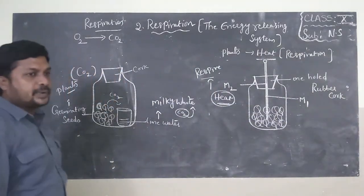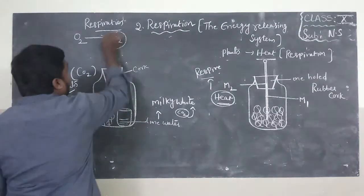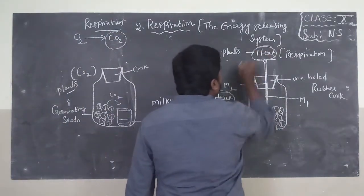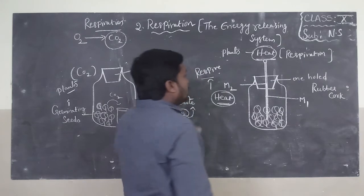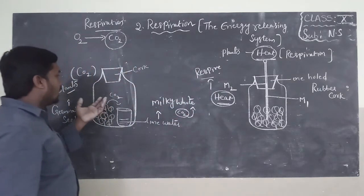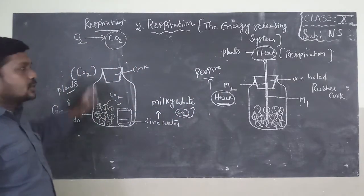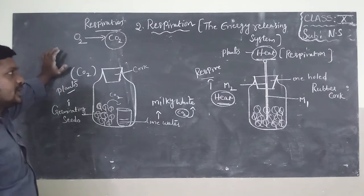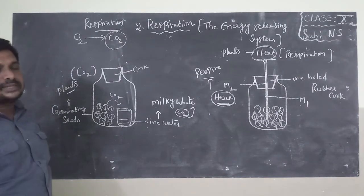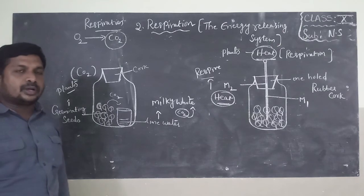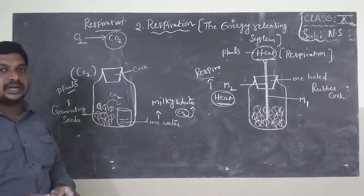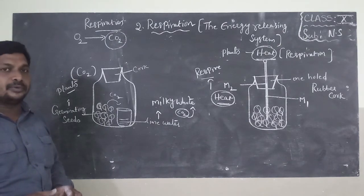In the process of respiration, plants release carbon dioxide and also release heat. So in respiration, plants take oxygen, release carbon dioxide, and some amount of heat. This is about respiration in plants. In the next class, I will explain about the comparison between photosynthesis and respiration. Thank you.